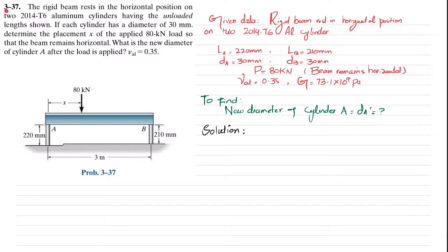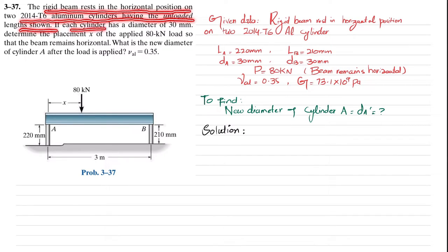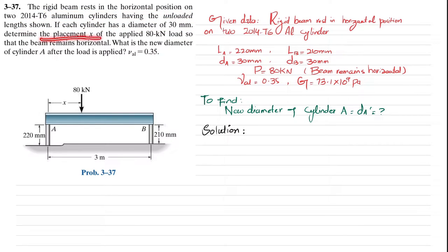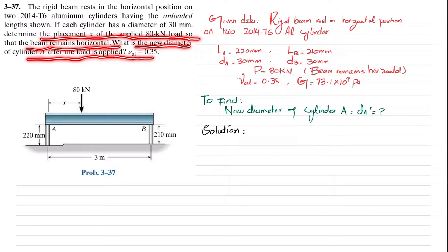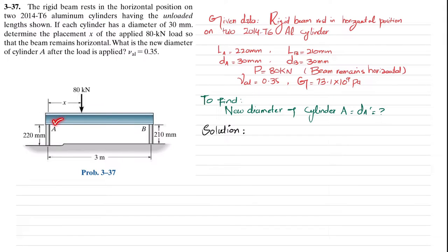Hello, welcome back. Problem 3.37. The statement is: a rigid beam rests in a horizontal position on two 2014-T6 aluminum cylinders having unloaded lengths as shown. If the cylinders have a diameter of 30 millimeters, determine the placement x of the applied 80 kilonewton load so that the beam remains horizontal. The Poisson's ratio of aluminum is 0.35.